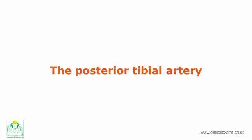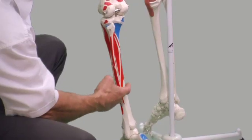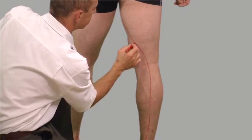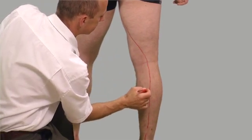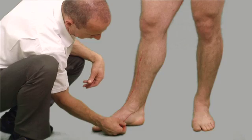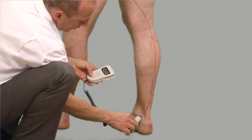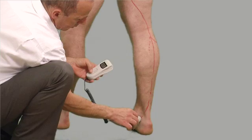The posterior tibial artery continues directly inferiorly, deep to the gastrocnemius, soleus, and plantaris muscles, then becomes superficial posterior to the medial malleolus. It then continues into the medial plantar aspect of the foot. At the ankle joint, the posterior tibial artery passes behind the medial malleolus, accompanied by the posterior tibial vein. It can be palpated inferolateral to the medial malleolus and is an important pulse in evaluating the vascular integrity of the lower extremities.